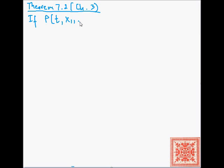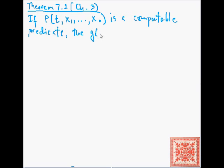It explores the relationship between unbounded minimalization and partial computability. Let's assume that P(t, x1, ..., xn) is a computable predicate. Then the unbounded minimalization of that predicate, defined as min of y P(y, x1, ..., xn), is partially computable.